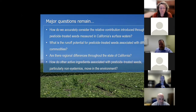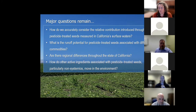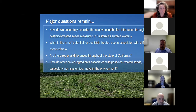Major questions that remain include: how do we accurately consider the relative contribution introduced through pesticide-treated seeds that are measured in California surface water? What is the runoff potential for pesticide-treated seeds associated with different commodities? Are there regional differences throughout the state? And how do other active ingredients associated with pesticide-treated seeds—particularly non-systemics—move in the environment? With that, I'll hand it back to Dr. Jennifer Tierlink.